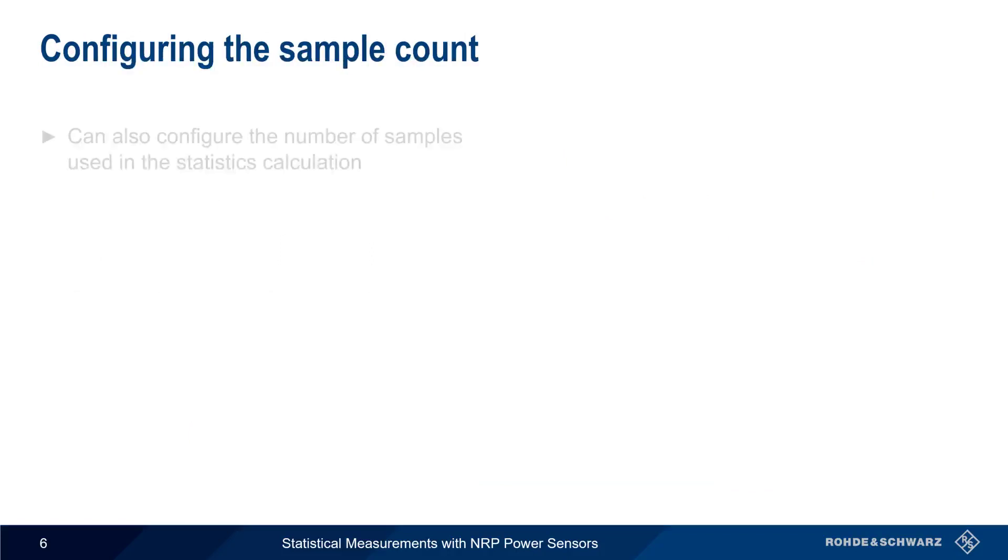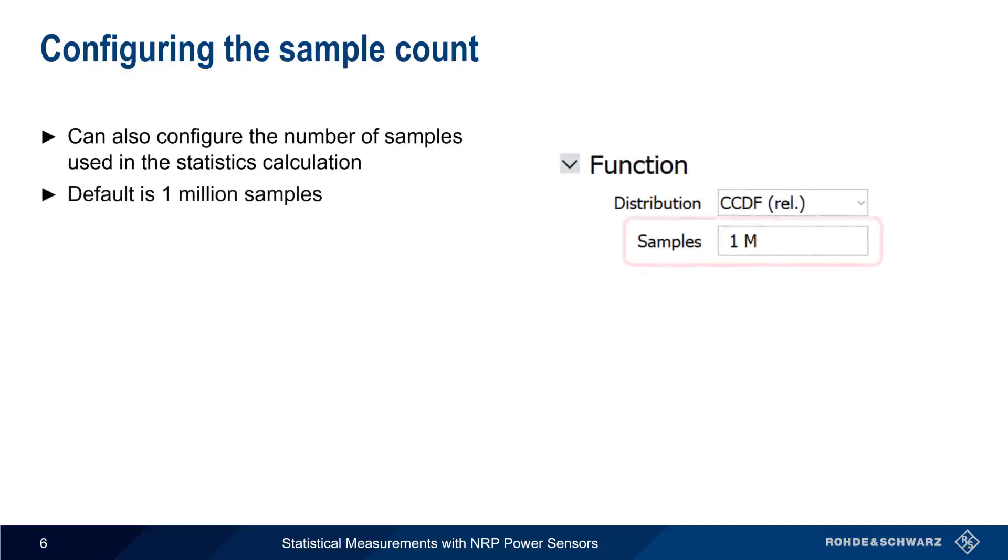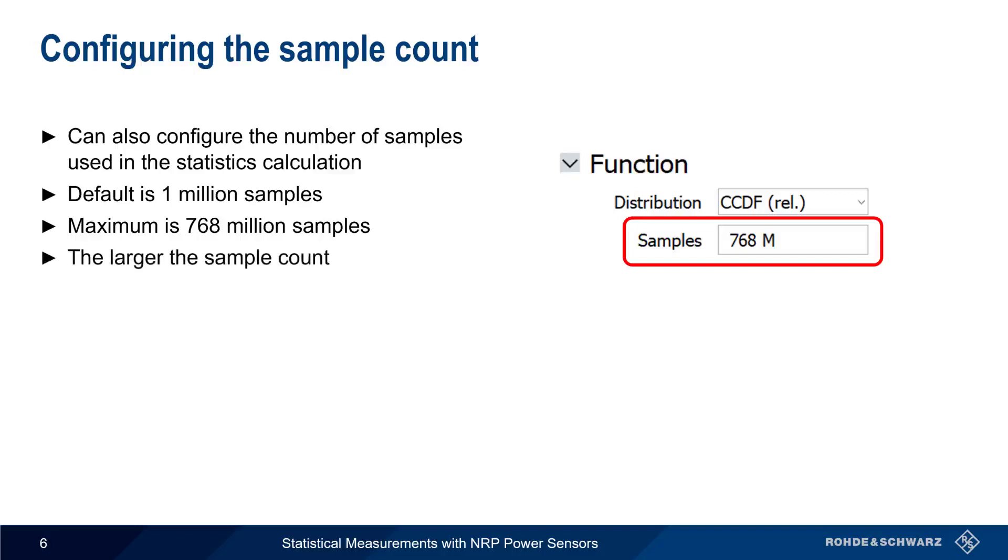Another important parameter is the number of samples used in our statistics measurements. The default sample count in PowerViewer is 1 million samples, and the maximum sample count is 768 million samples. Increasing the sample count can help get better results, but the larger the sample count, the longer it will take for measurement results to stabilize.